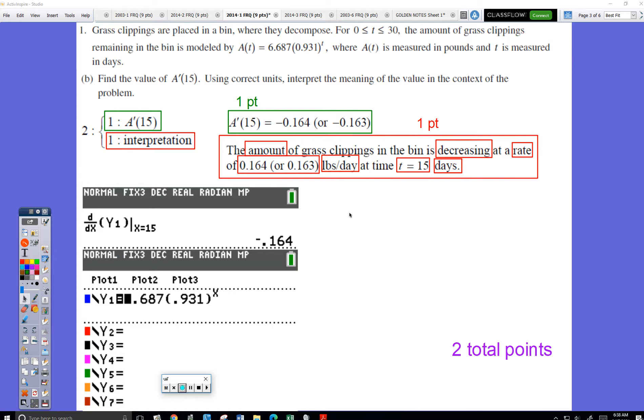Part B says find the value of A prime of 15. It gave me a formula for A. So A prime of 15 would indicate how fast A is changing, or the rate of change of A, on day 15. So I do the derivative of A.